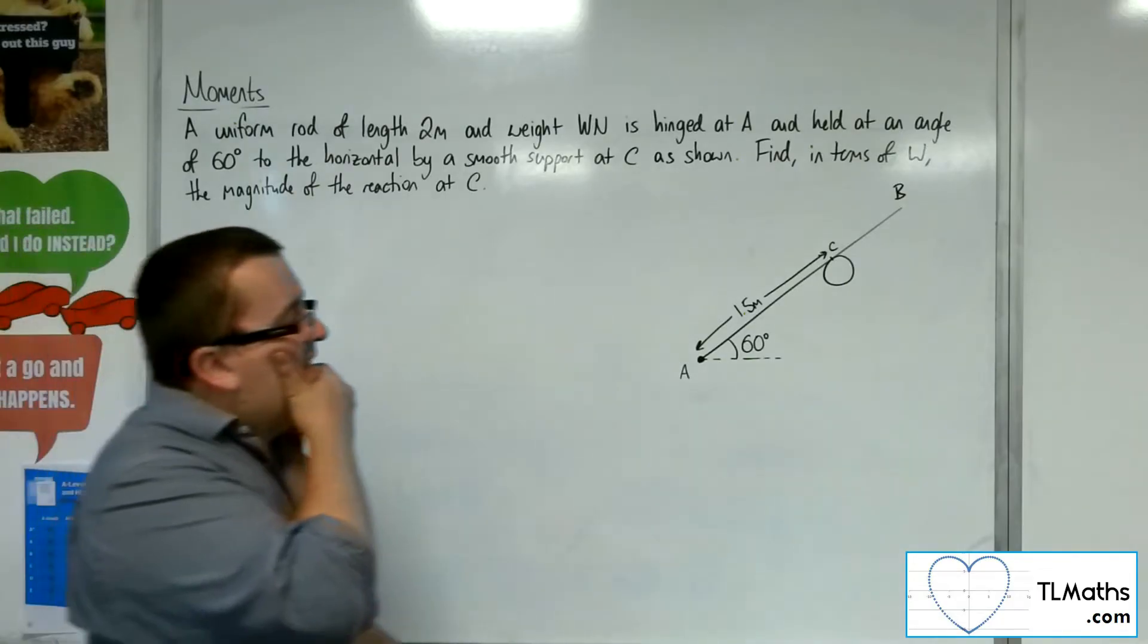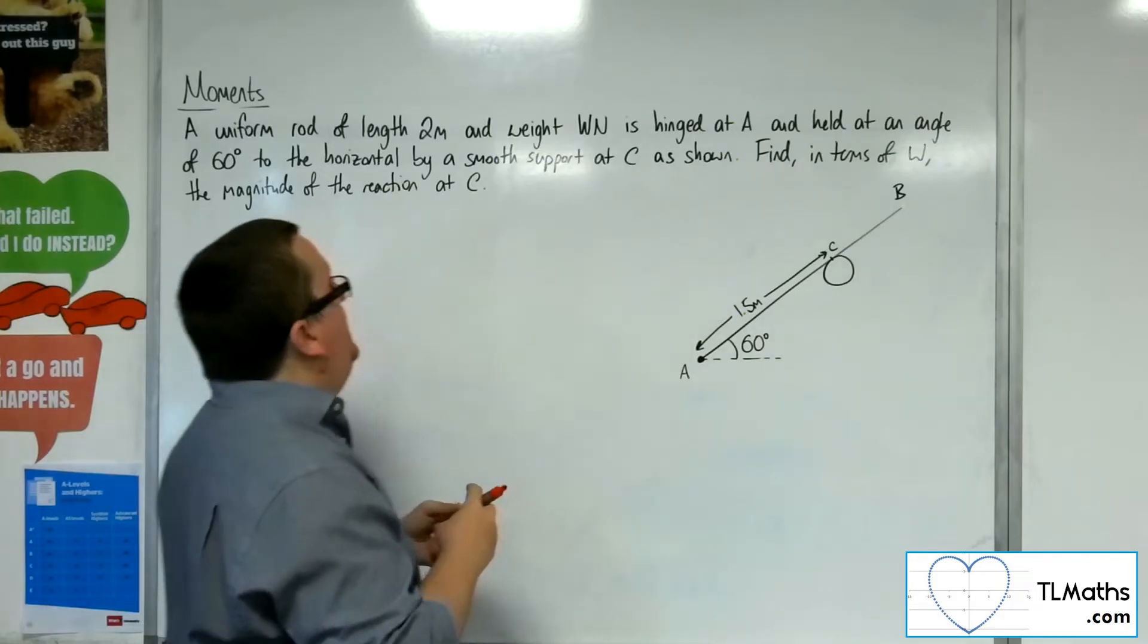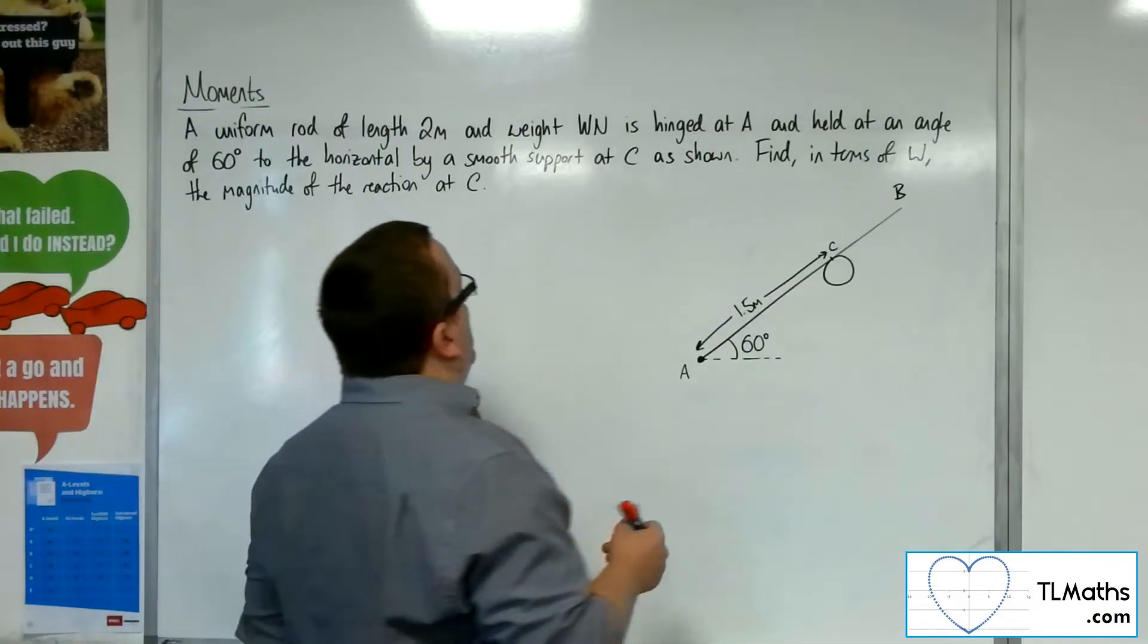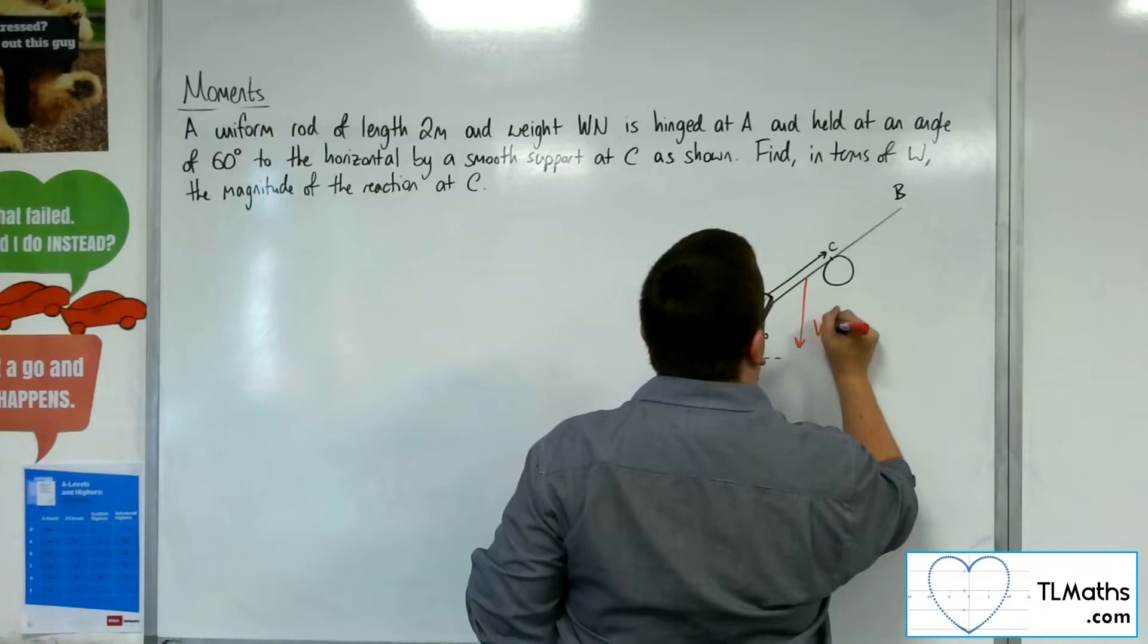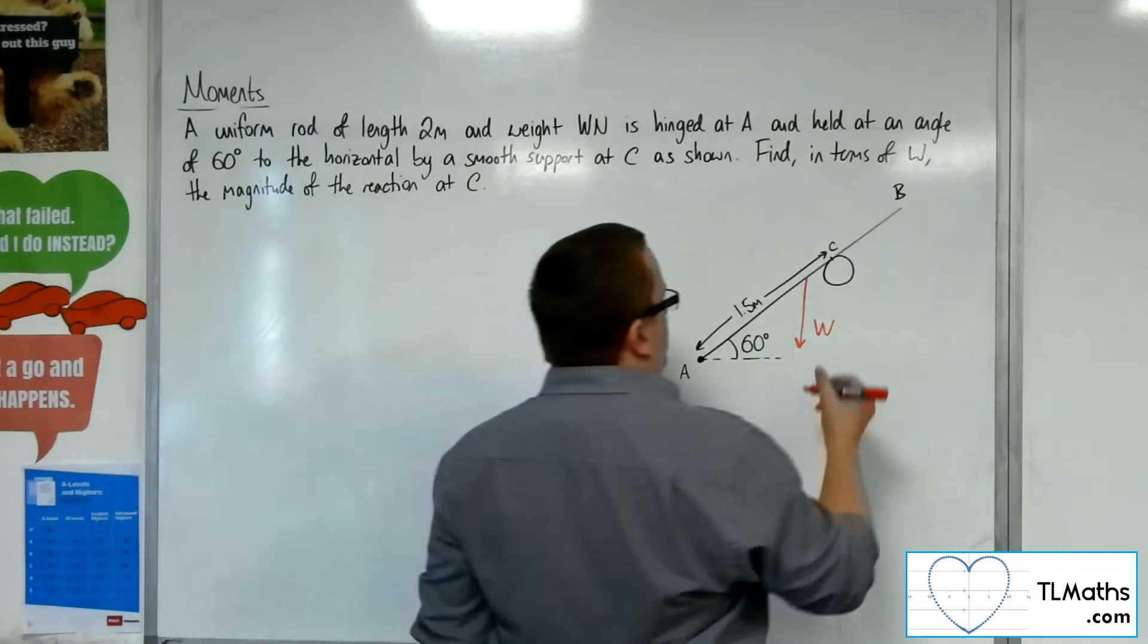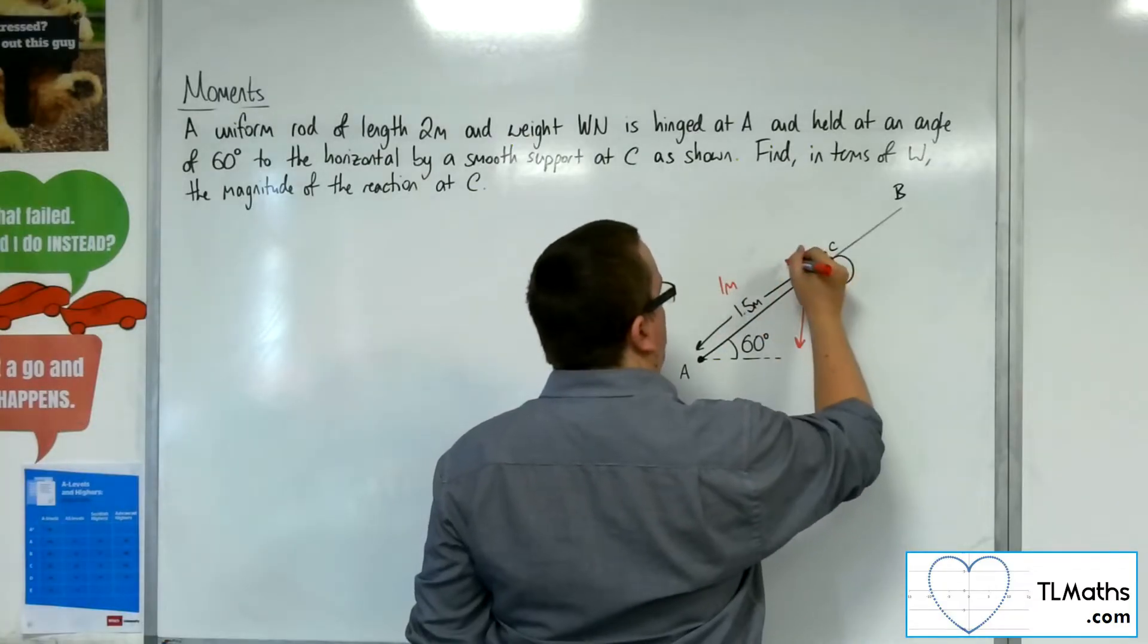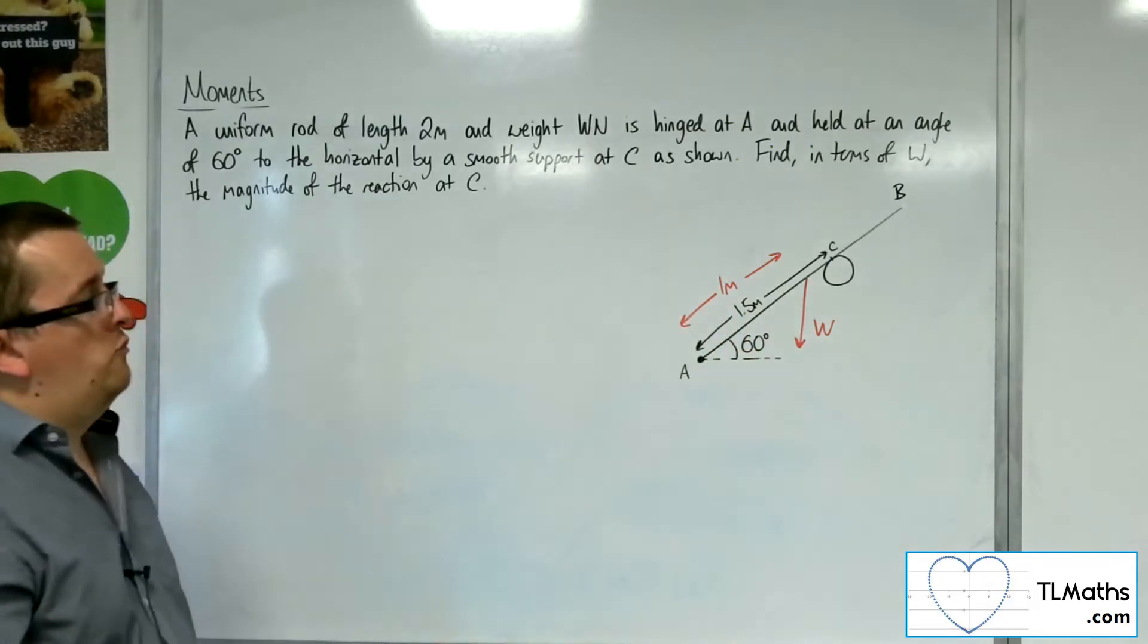OK, so let's draw on what we know here. We know that the uniform rod has length 2 metres and weight W newtons. So it's got this weight working vertically downwards, and that distance there will be 1 metre from A to the centre of the rod.